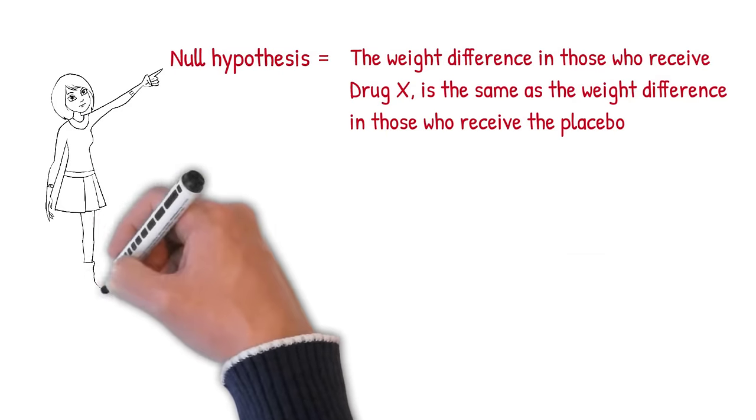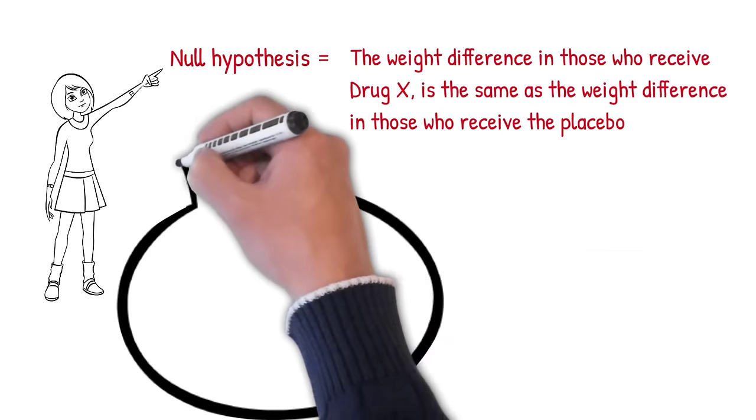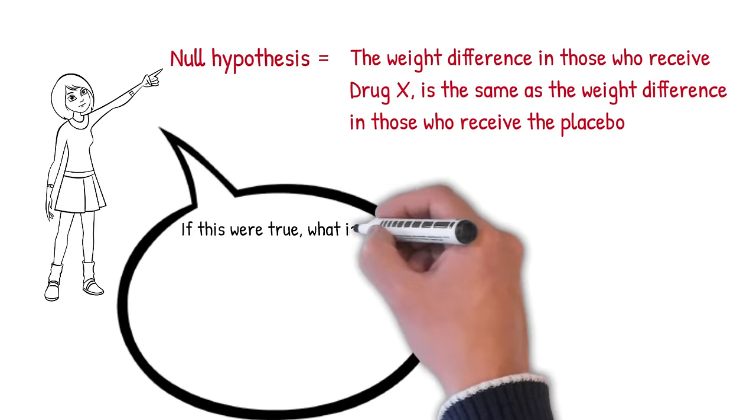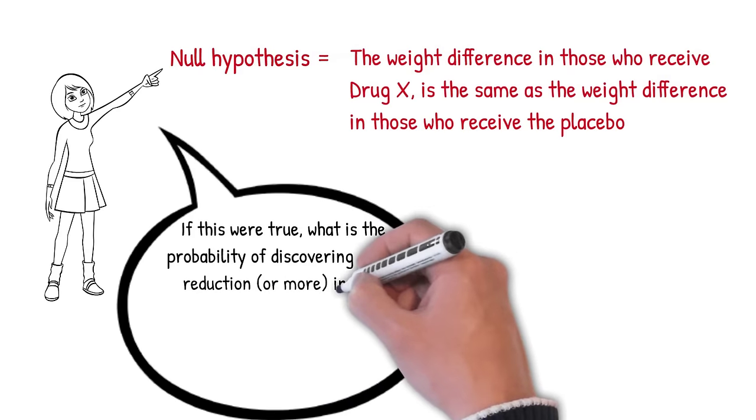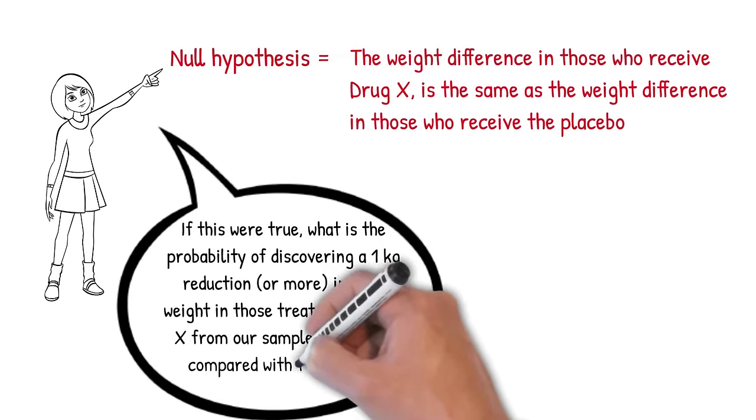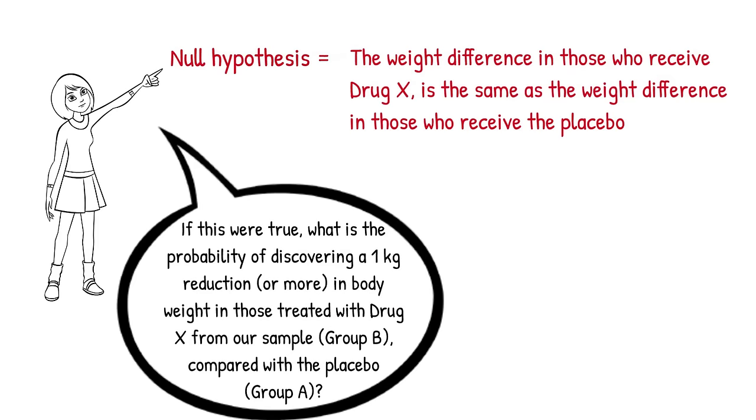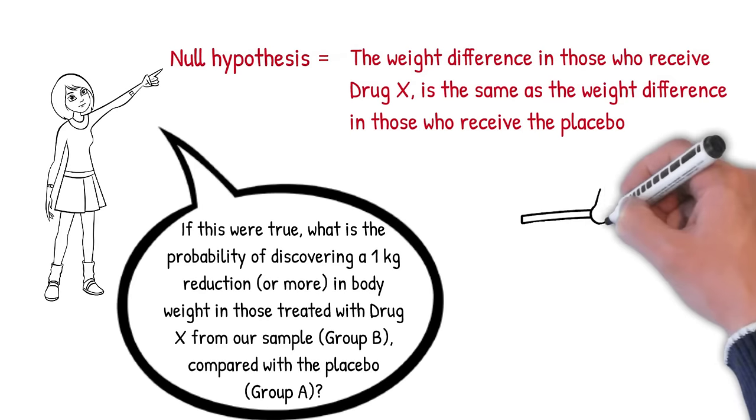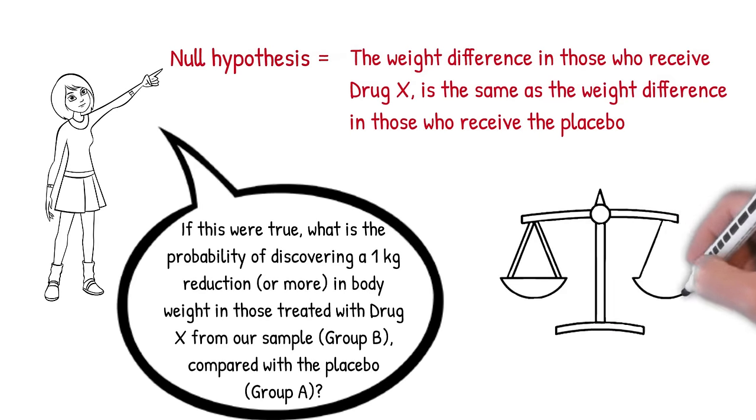Now we can ask ourselves, if this null hypothesis were true, what is the chance or probability of discovering a 1 kg reduction or more in body weight in those treated with drug X from our sample? This probability measures the strength of evidence against the null hypothesis.